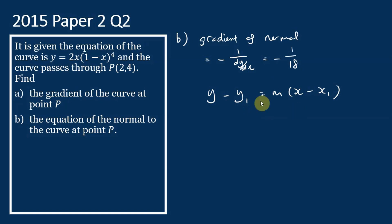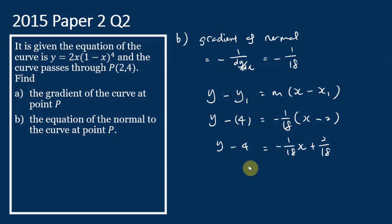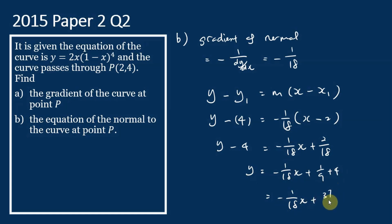To find the equation, we use the formula y - y1 = m(x - x1), since we know the gradient and the coordinates of point P. Substituting: y1 = 4, m = -1/18, x1 = 2, we get y - 4 = -1/18 * (x - 2). This simplifies to y = -1/18 * x + 2/18 + 4, which equals y = -1/18 * x + 37/9. This is the equation of the normal.